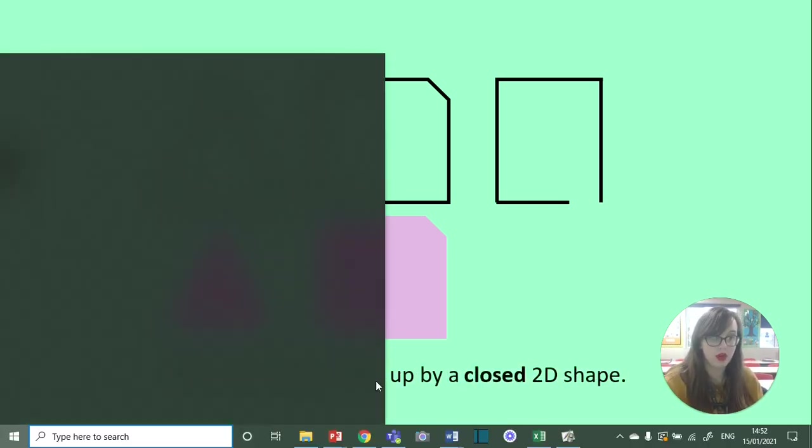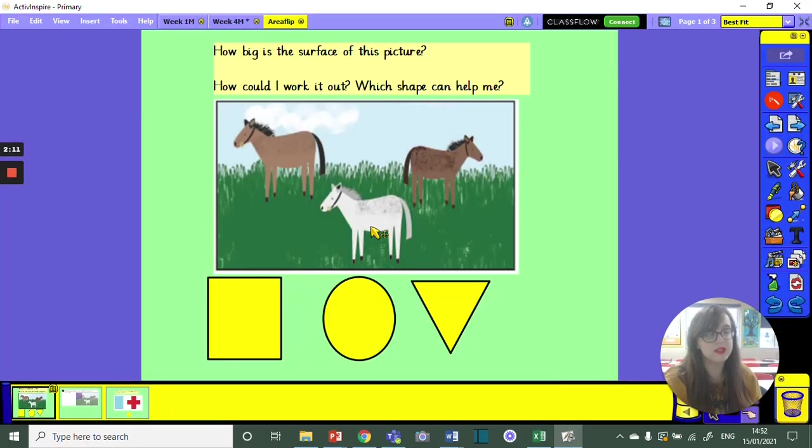I'm going to move over now to my flip chart. It's been a little while since we used one of these. And here's why area is important. So I have this lovely picture here of three horses in a field. Very beautiful. I'll hang it on my wall when I get home. But I want to know how much area there is. How big is the surface of this picture? Because I need to put glass over the top of it probably. I've got some shapes here that might help me to measure it.